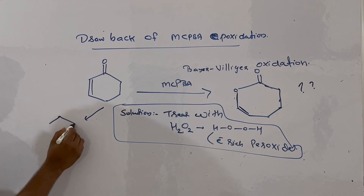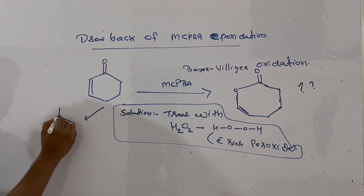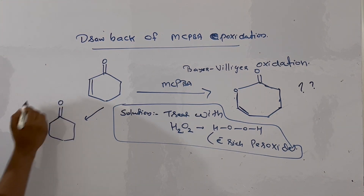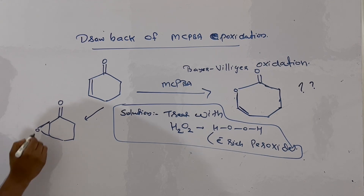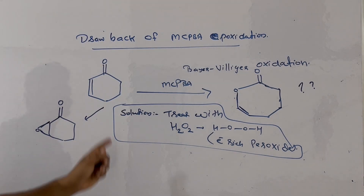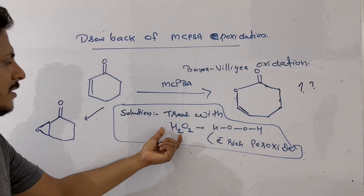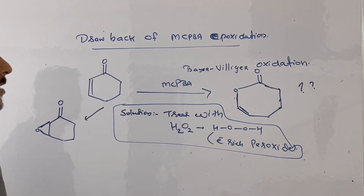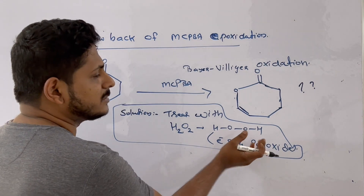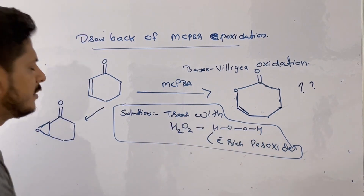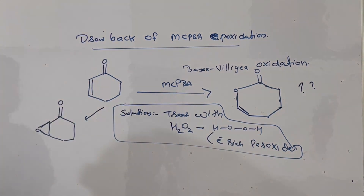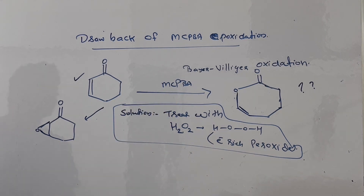If you have both a ketone and an alkene and want to specifically epoxidize only the alkene, the solution is to use H₂O₂ instead of mCPBA. H₂O₂ is an electron-rich peroxide, so it can easily undergo epoxidation specifically in the case of alpha-beta unsaturated carbonyl compounds. This problem can be avoided by using H₂O₂ as the oxidizing reagent.